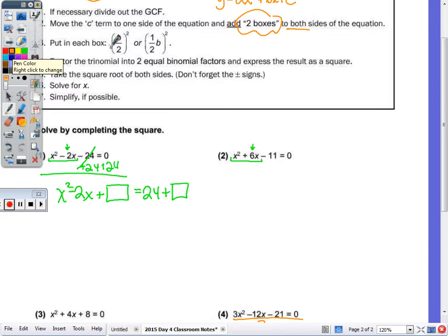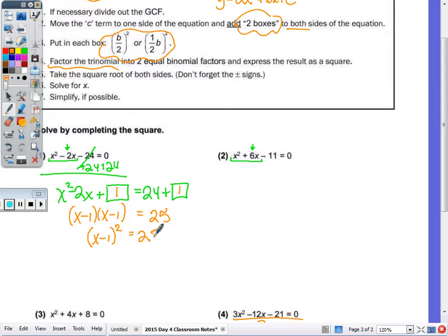Remember, in each box is half of the b squared. So half of 2 is 1, 1 squared is 1. So I end up with, I can combine the right side to get 25, and then I factor the trinomial that's on the left. So this factors x minus 1, x minus 1, but then we rewrite that as x minus 1 squared, so that we can undo the square by taking the square root.